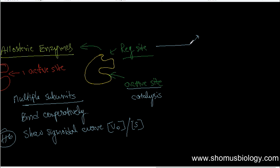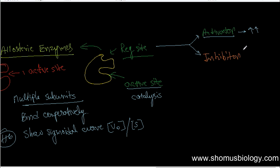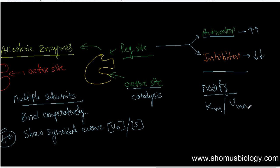The regulatory site of allosteric enzymes has two different roles: an activator can bind, or an inhibitor can bind. If an activator binds, it will increase the rate of reaction. If an inhibitor binds, it will decrease the rate of reaction. In both cases, it will modify the Km as well as the Vmax value of the enzymatic reaction.